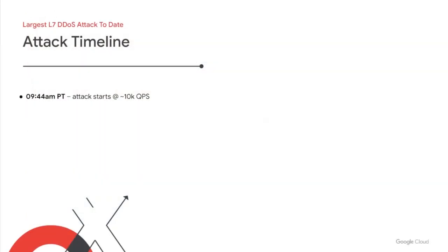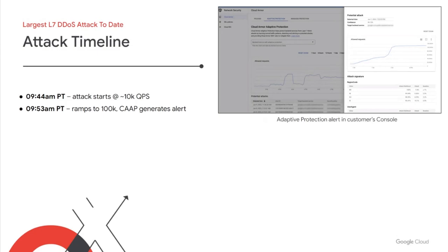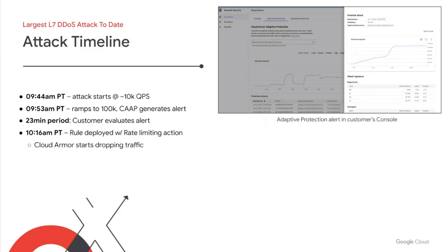To give you a sense of how quickly these things happen, I'll walk you through a rough timeline. At 9:44 a.m. Pacific time, the attack started at roughly 10,000 requests per second. Over the next nine minutes, it ramped to about 100,000 requests per second, triggering adaptive protection to detect and generate an alert. After a brief period of triaging the situation and validating Cloud Armor's recommended rule, the customer deployed a rate limiting rule based on the adaptive protection suggested signature. Shortly thereafter, the attack began to ramp up to its 46 million peak, and since the customer had already deployed our suggested rule, Cloud Armor was able to drop most offending requests and help ensure that the customer's application remained available.